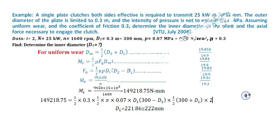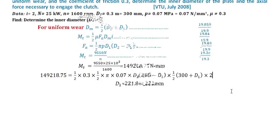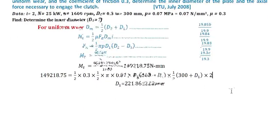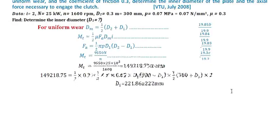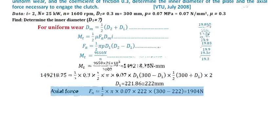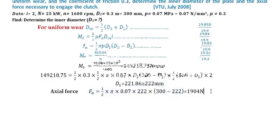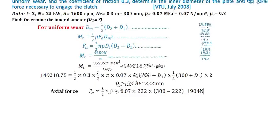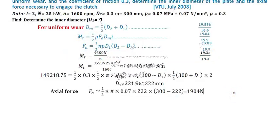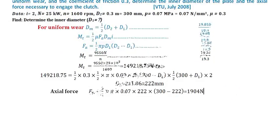You will get d1 equals 221.86, approximately 222 millimeters. For axial force, substitute in the formula and you will get 1904 newton. In this way you have to solve the problem. I am Sundosh Gadankar, thank you very much.